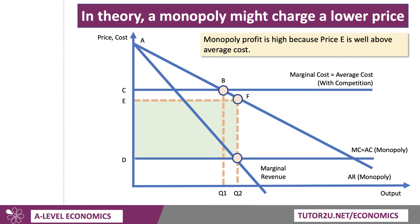So the green area shows the super normal profit. Now, this might be worth taking a screenshot and adding to your notes. In theory, in this situation, if the scale economies are big enough, then you might actually get a lower price with monopoly. It's one of those slightly counterintuitive outcomes that are particularly very good for evaluation in a monopoly question.